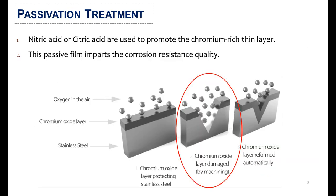During passivation treatment, nitric acid or citric acid are used to promote a chromium-rich thin layer. When the chromium thin layer gets damaged during manufacturing and fabrication of the metal surface, corrosion attack starts. In order to avoid rust and increase the life of the metal surface, passivation treatment must be applied.